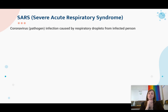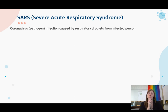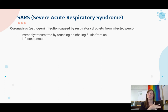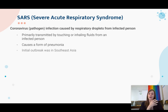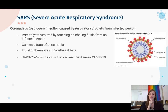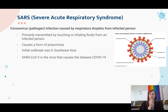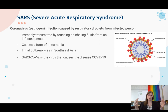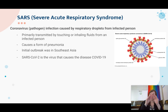SARS stands for Severe Acute Respiratory Syndrome. It is a coronavirus — a type of virus — that is caused by respiratory droplets from infected persons. It is primarily transmitted by touching or inhaling fluids from an infected person and causes a form of pneumonia. The first SARS outbreak occurred in Southeast Asia. You're probably more familiar with SARS because SARS-CoV-2 is the virus that causes COVID-19. So COVID came from a mutating SARS virus. Coronavirus is a group of viruses; SARS is one type within that group, and COVID-19 is the disease caused by a specific SARS coronavirus.